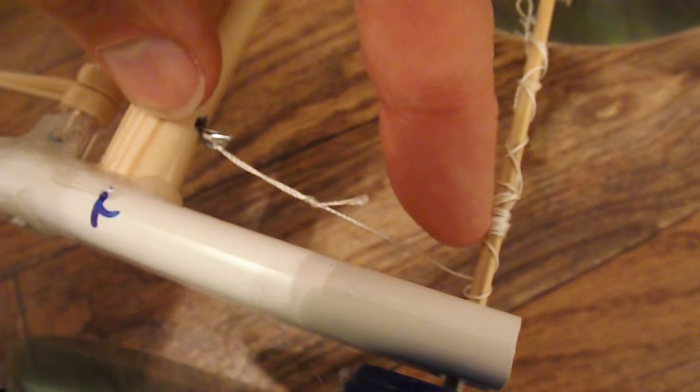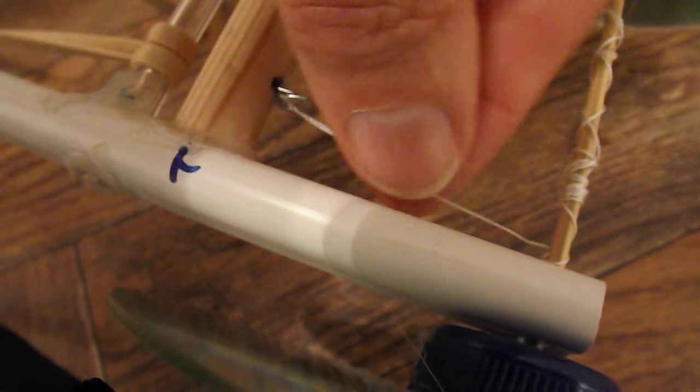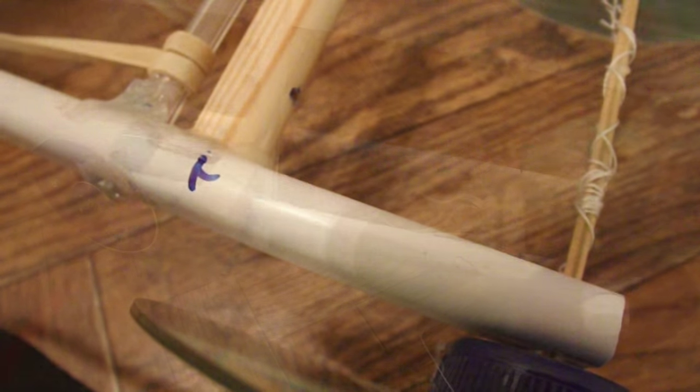And as the axle goes round, it winds up that piece of cotton and eventually pulls it out and releases the catapult.